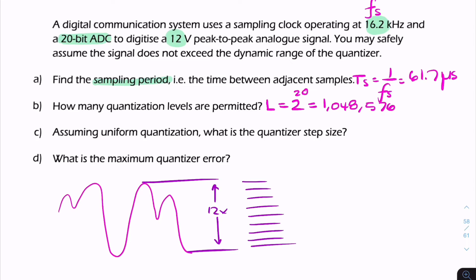What's the quantizer step size? To find the step size, it's related to two things: the dynamic range, in this case 12 volts, and the number of levels. Delta is the peak-to-peak value or dynamic range divided by the number of levels.